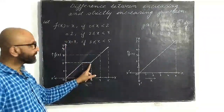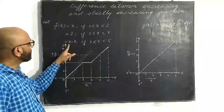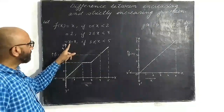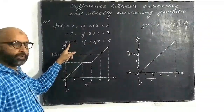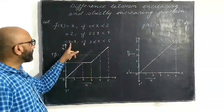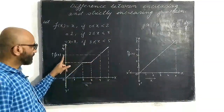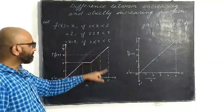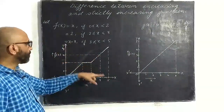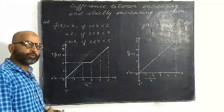From 3 to 5, the function equals x − 1. So when x = 3, f(x) = 2; when x = 4, f(x) = 3; and when x = 5, f(x) = 4. So the function's value is 4 at x = 5.